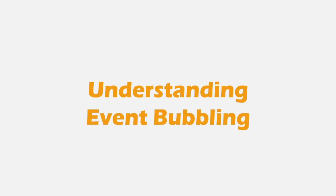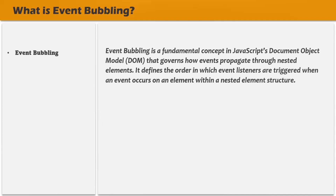In this lecture, we are going to understand a very simple concept in JavaScript which is event bubbling, and it is also a very important interview question. Event bubbling is a fundamental concept in JavaScript's Document Object Model (DOM) that governs how events propagate through nested elements. It defines the order in which event listeners are triggered when an event occurs on an element within a nested element structure. This statement might be a bit confusing, so let's try to understand it practically.